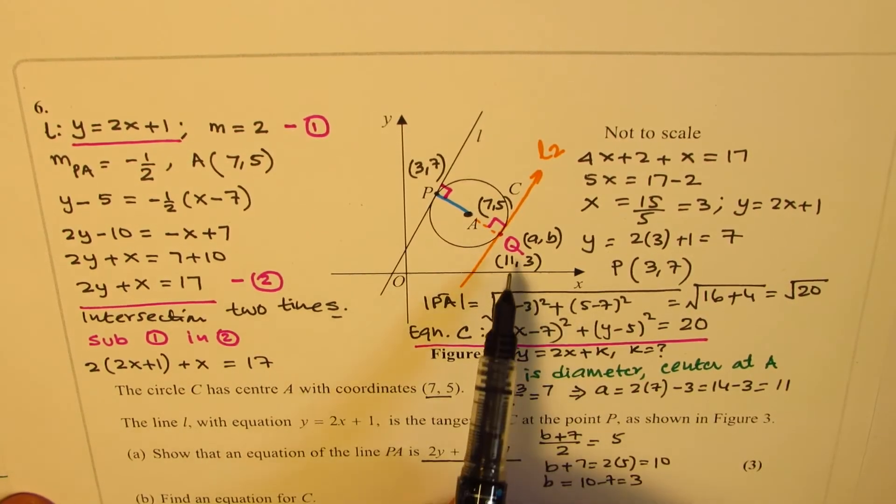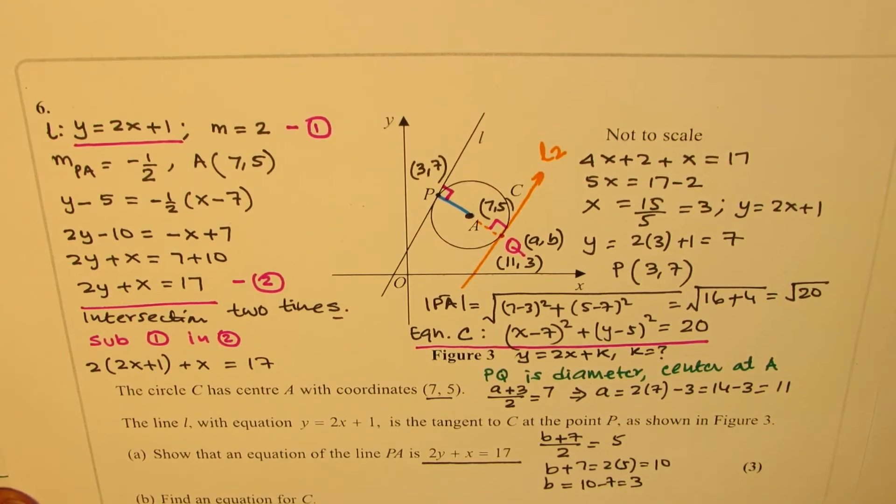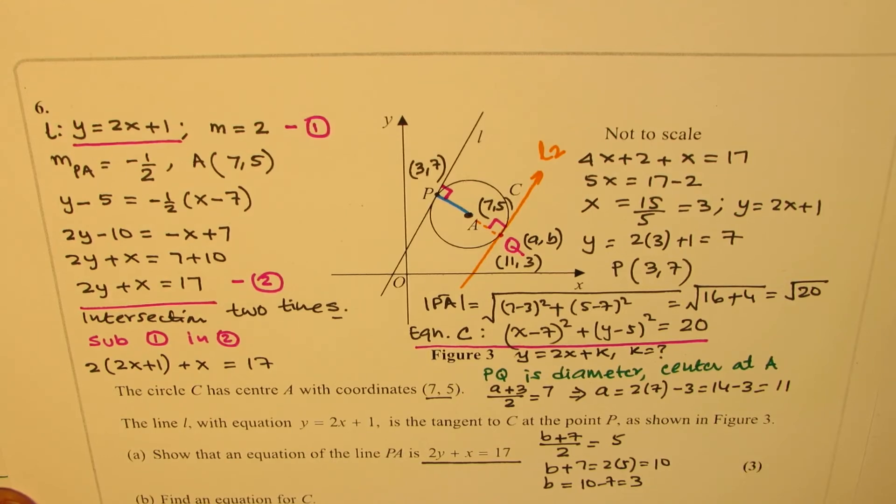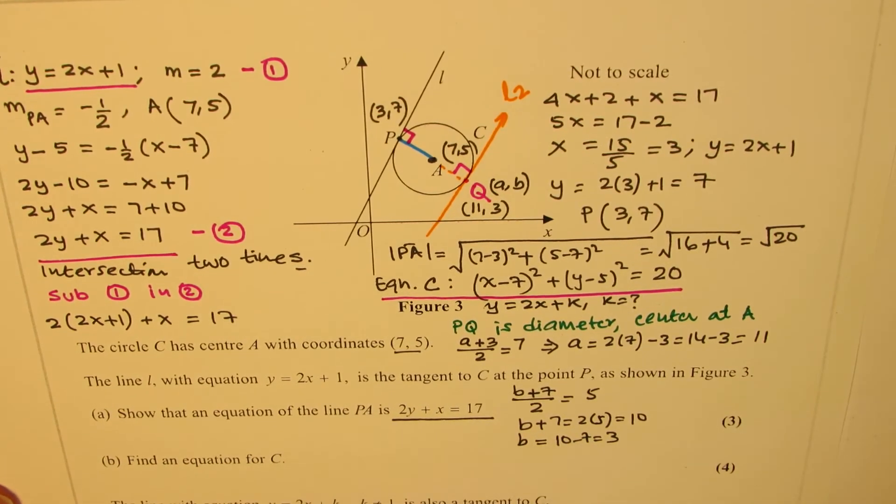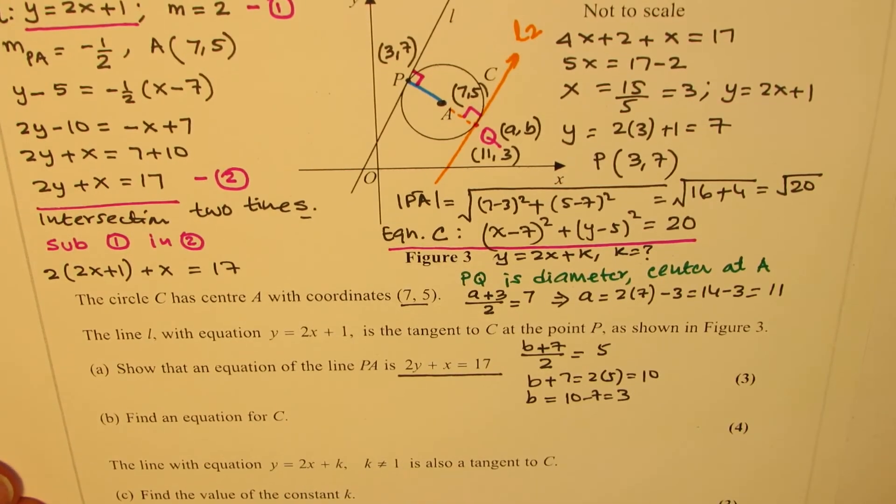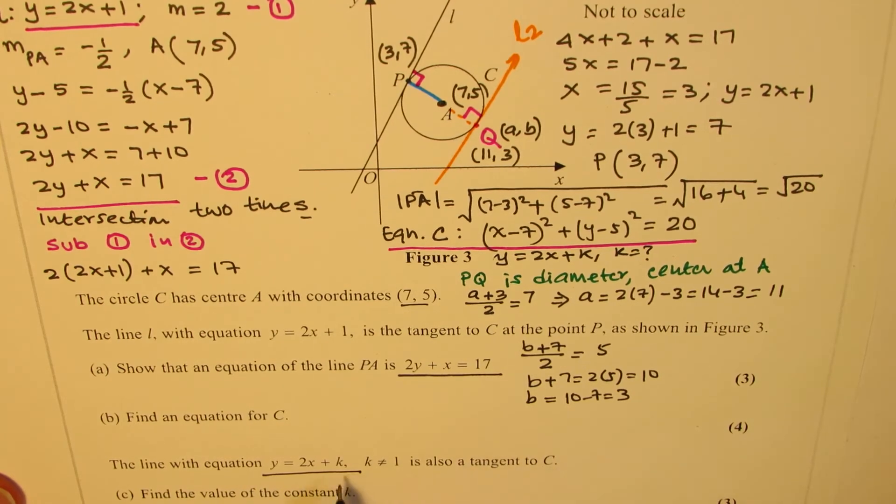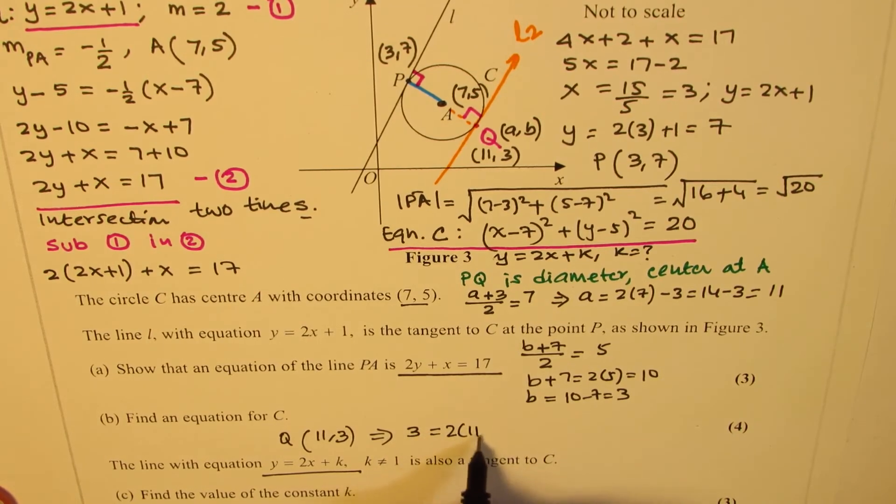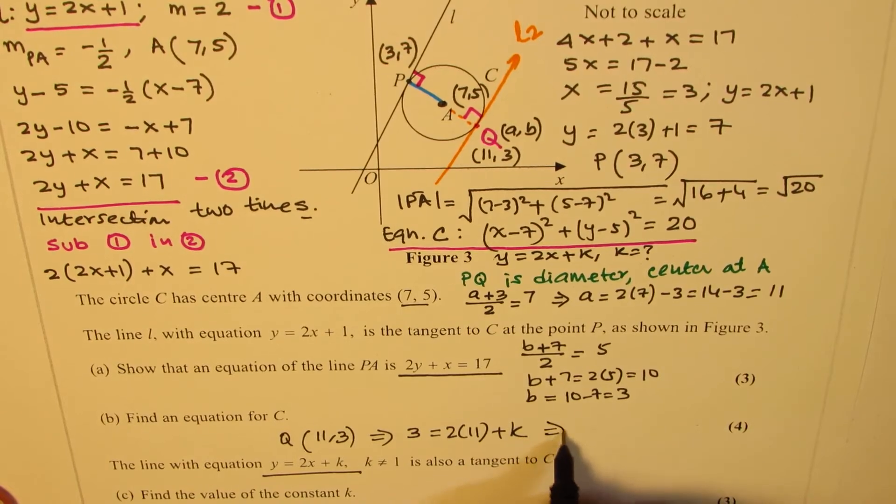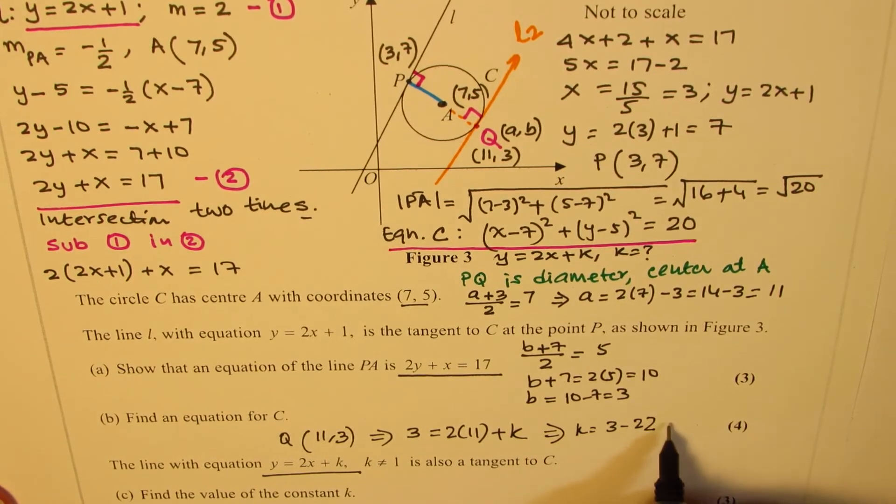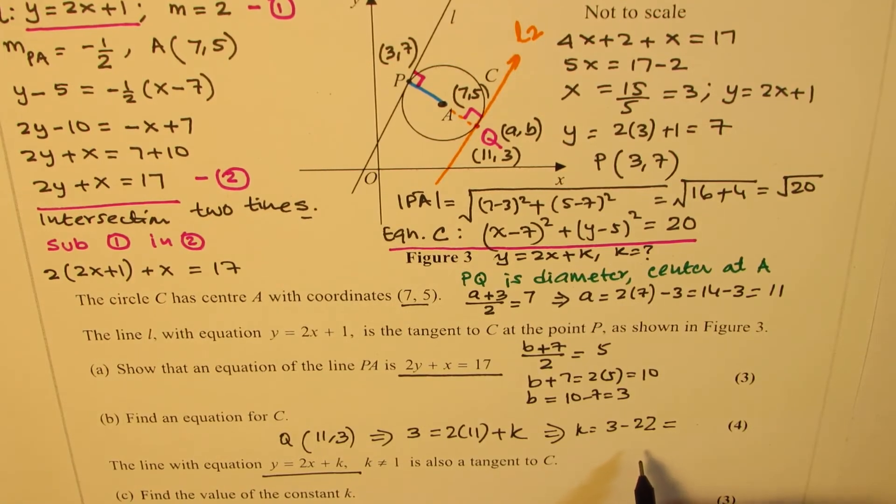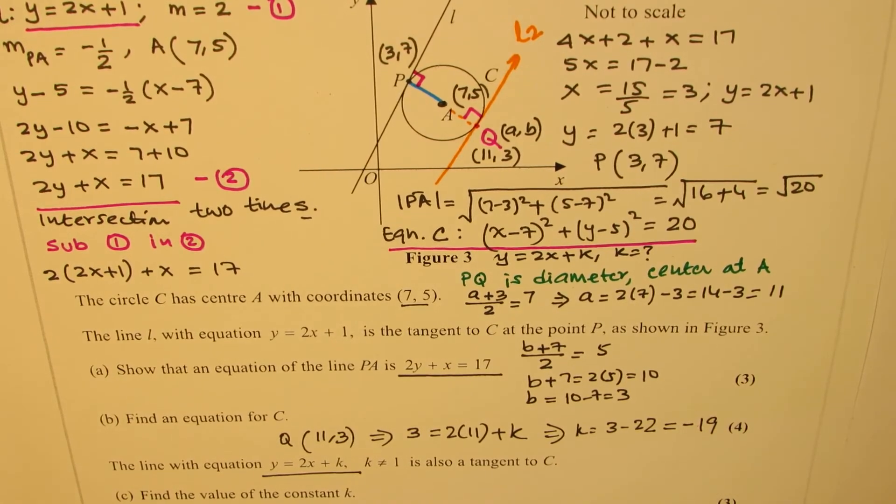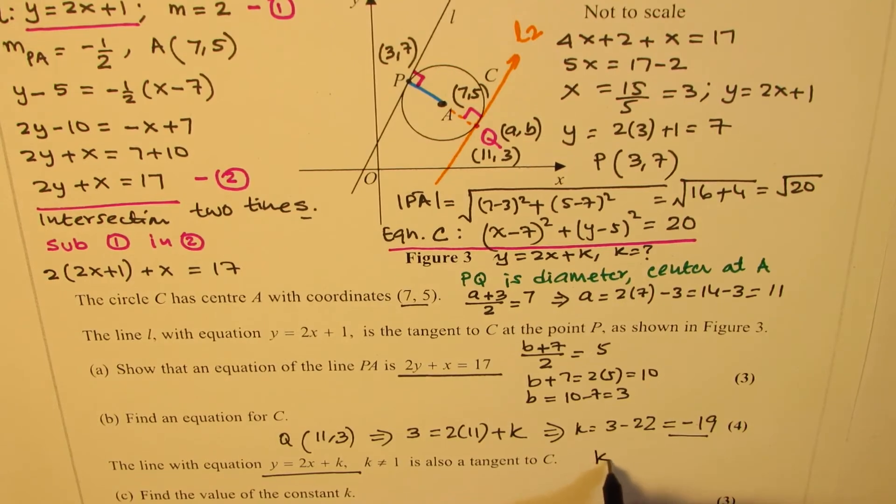Now, point Q is on the line y = 2x + k. I'm going to place the point Q, which is (11, 3), to get the value of k. We get 3 = 2(11) + k. This implies k = 3 - 22 = -19. So the value of k is -19. That is how we find the second equation of the second line, which is tangent with the same slope as the first line.